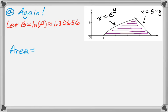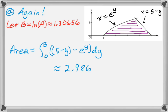So the area is going to be the integral from 0 to B of the right-hand curve, which is 5 minus y, minus the left-hand curve, which is e to the y, and then a dy. And if you punch that one in, you get the same value that we got the other way, which is reassuring.